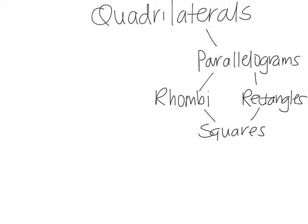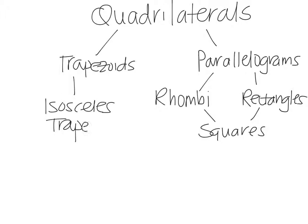Let's also think we now know from before that we have trapezoids. And then from that, we have an isosceles trapezoid. So take a moment and think about where a kite would fit in. And we'll talk about that tomorrow.